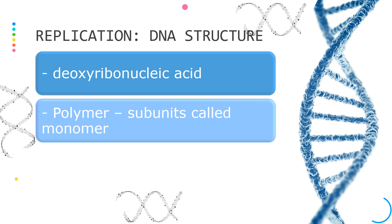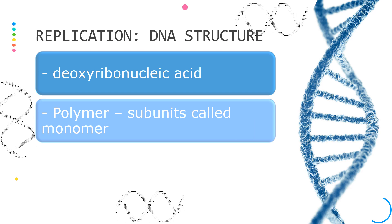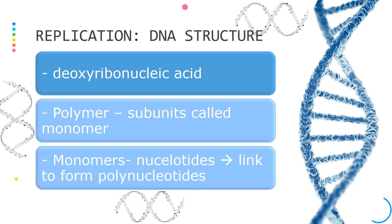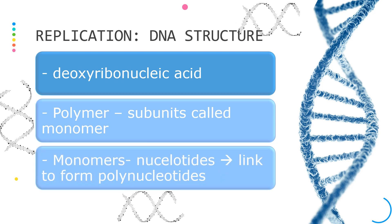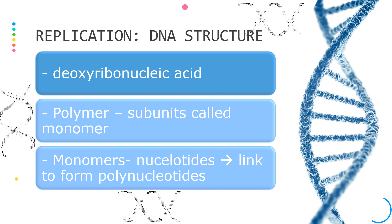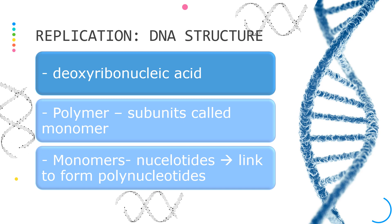A polymer is a long chain-like molecule made up of subunits called monomers. In DNA, the monomers are called nucleotides and these are linked together to form a polynucleotide chain that can be hundreds, thousands or even millions of nucleotides in length.